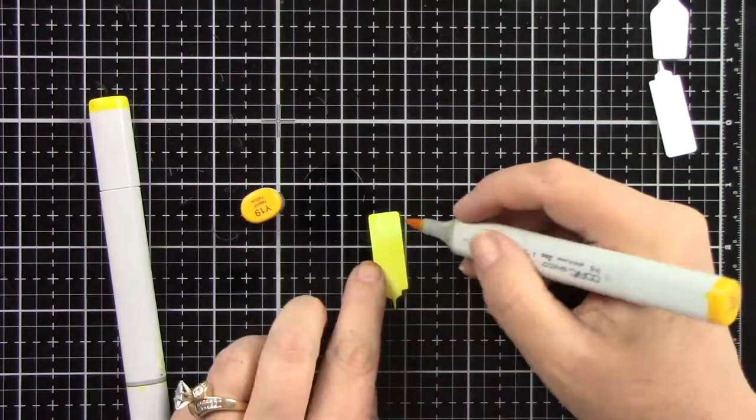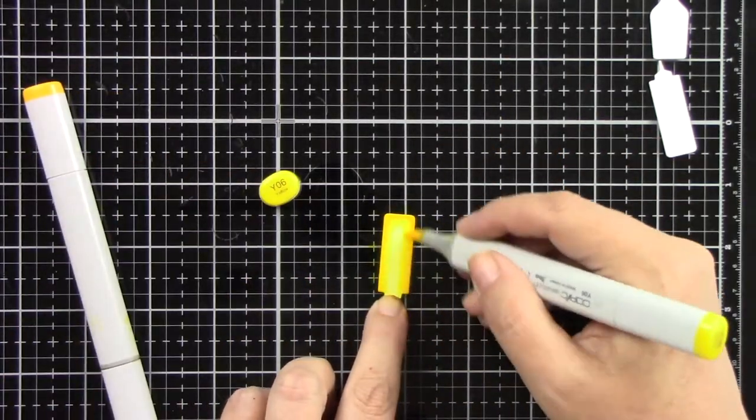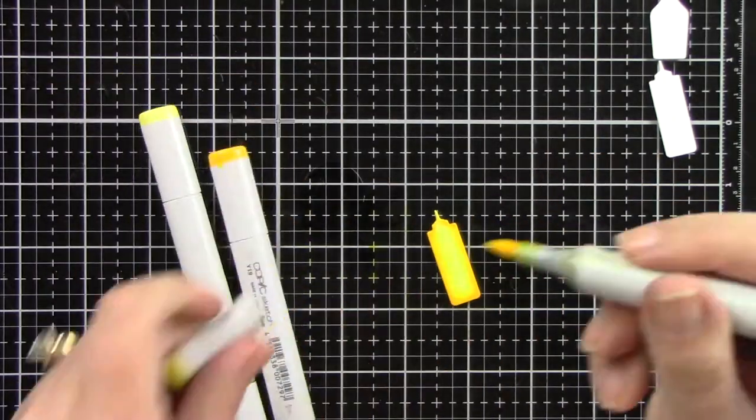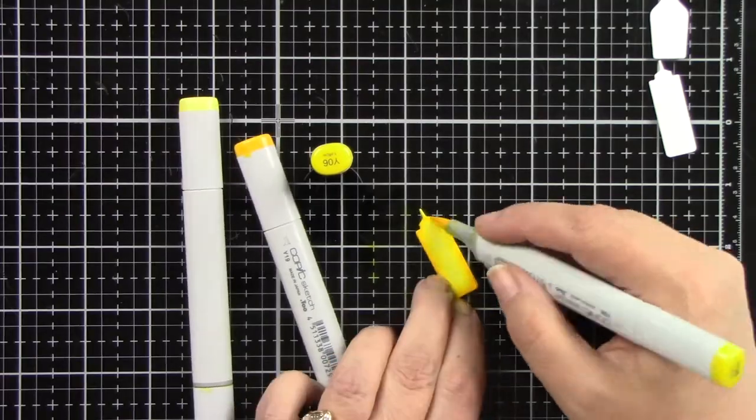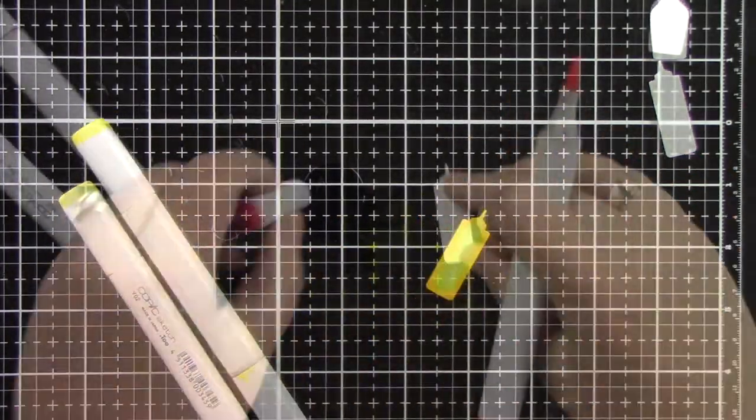I'm going to color the mustard bottle with Y02, 06, and 19. Laying down the light color again. I'm not being super neat about it but I want some darker edges and lighter on the inside. This turned out really cute.